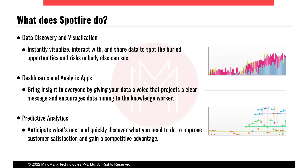There are three main features of Spotfire: data discovery and visualization, dashboard and analytics apps, and predictive analysis. Data discovery and visualization means instantly visualizing, interacting with, and sharing data to spot buried opportunities and risks nobody else can see. When you fetch your data into Spotfire, it gives you interactive visualizations so you can see risks in your data and in your organization, and it brings up an interactive dashboard from that data — giving your data a voice that projects a clear message and encourages data mining for the knowledge worker.